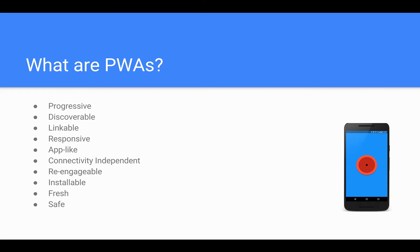A Progressive Web App must also be re-engageable — one of the key features from native applications. When a user installs a native app they are more likely to return, and Progressive Web Apps try to take the best of both worlds. Push notifications are an example of this. PWAs are also installable — you can add them to the home screen. They must be fresh so content is always up to date, and finally they must be safe, meaning they only work over HTTPS.